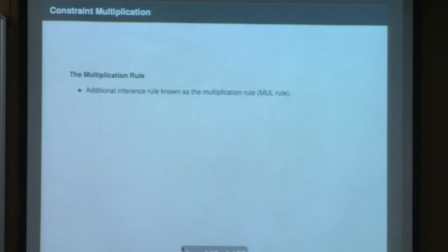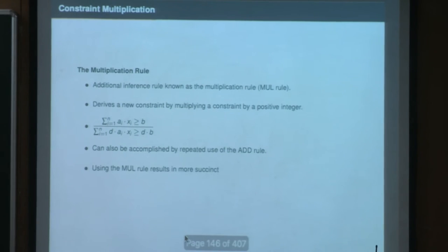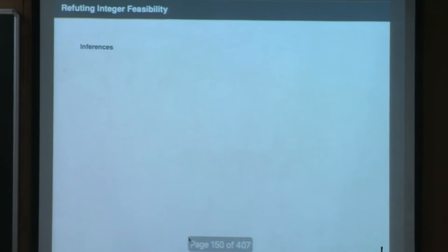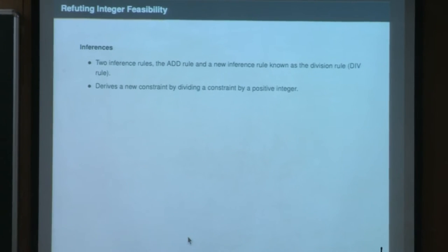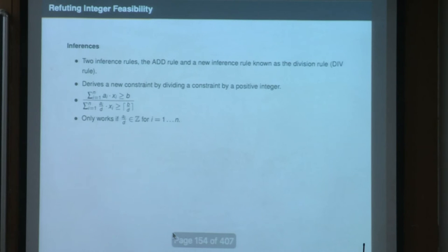There is also the multiplication rule (mul rule): you can multiply any relationship by a positive constant. While the mul rule is not strictly necessary—you can accomplish the same with the add rule—it makes proofs more succinct. For refuting integer feasibility, we have two rules: the add rule and the new division rule (div rule), which derives a new constraint by dividing by a positive integer d, taking the ceiling on the right-hand side, provided all coefficients a_i/d are integers.